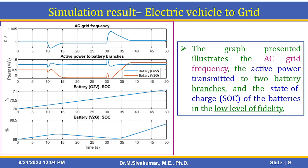After simulation, you get a plot showing the AC grid frequency, active power to the battery branches, and the battery block state of charge — for both grid to vehicle and vehicle to grid. This graph represents the AC grid frequency, the active power transmitted to the two battery branches, and the state of charge of the batteries in low fidelity mode. You can set low, medium, and high — three types of modes for modifying the fidelity.